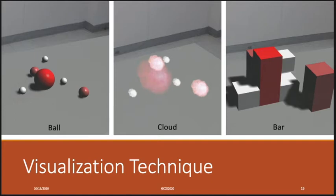We also developed three different types of models: the ball, the cloud, and the bar. As we can see, the color of each type of model changes from white, which means low concentration, to red, which is high concentration.